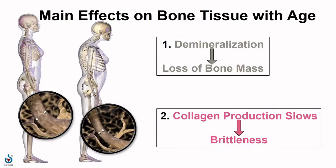With age we see two general changes in bone. One is a loss of minerals through demineralization, leading to a decrease in bone mass. Also, the production of collagen slows. So not only are these bones smaller, but they're also more brittle. We can see how that changes the diameter of the trabeculae and the thickness of bone in general, leading to fractures being more frequent in older individuals.